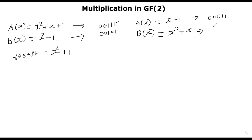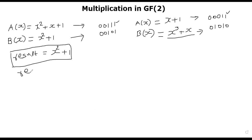We look at the least significant bit of the new A, which is turned on. Therefore, we take the current B and add it to the result. Since we are in GF(2), addition is XOR. So we take x² + 1 and XOR it with x³ + x, giving a new result of x³ + x² + x + 1.